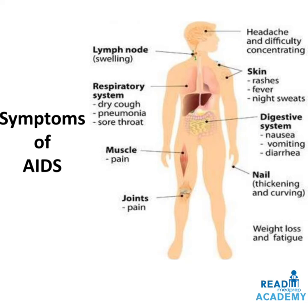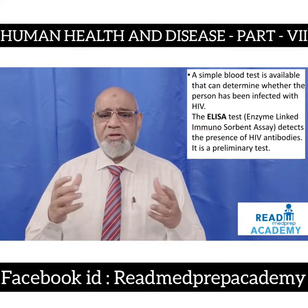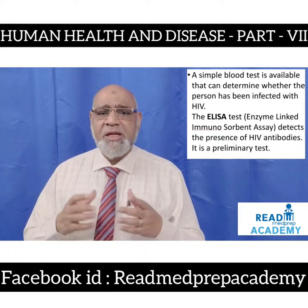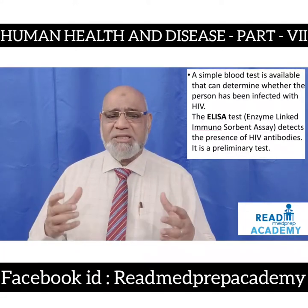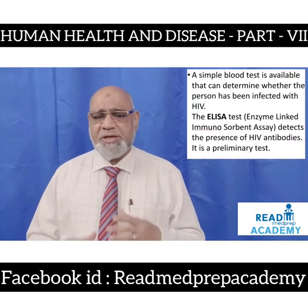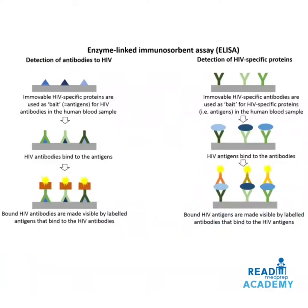A simple blood test is available to determine whether a person has been infected with HIV. The ELISA test — Enzyme-Linked Immunosorbent Assay — detects the presence of HIV antibodies and is a preliminary test. In the ELISA, immobilized HIV-specific proteins are used as bait — that is, antigens — for HIV antibodies in the human blood sample. The HIV antibodies bind to the antigens, and the bound HIV antibodies are made visible by labeled antigens that bind to the HIV antibodies.